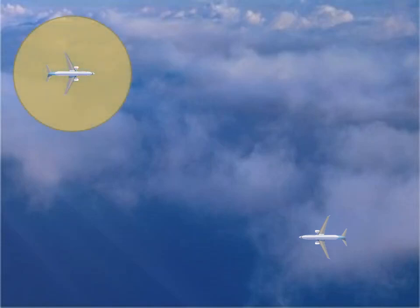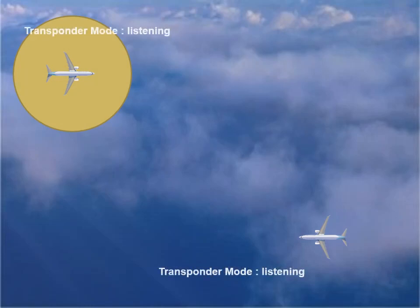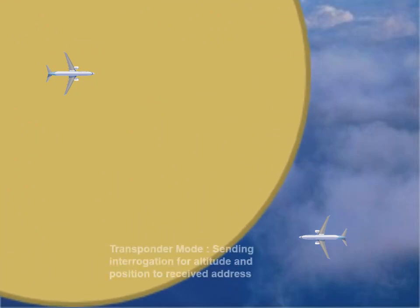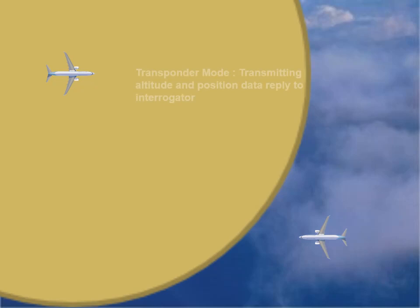Types of alert. Transponders spend much of their time in listening mode. Each aircraft's transponder transmits its address once a second; this signal is called a squitter. On receiving this message, other transponders send a Mode S interrogation to that address for altitude and position data. On receiving the interrogation, the transponder transmits a Mode S reply signal containing the required data to the interrogating aircraft. On receiving this data, TCAS knows the exact altitude and can calculate the approximate range and bearing of the aircraft.